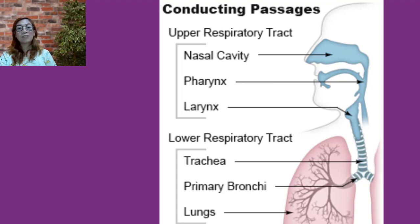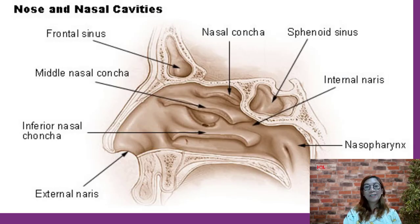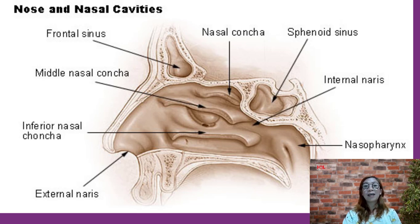The framework of the nose consists of bone and cartilage. There are two small nasal bones and extensions of the maxillae that form the bridge of the nose, which is the bony portion. The remainder of the framework is cartilage, which is the flexible portion. Connective tissue and skin cover the framework. Air enters the nasal cavity from the outside through the two openings of the nostrils or external nares. The openings from the nasal cavity into the pharynx are the internal nares. Nose hairs at the entrance to the nose trap large inhaled particles.